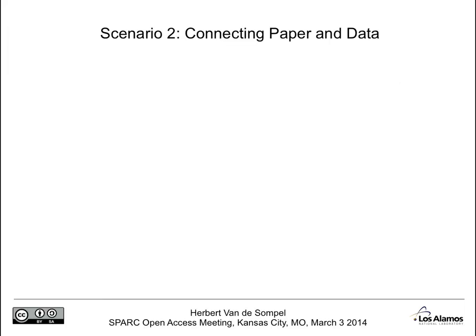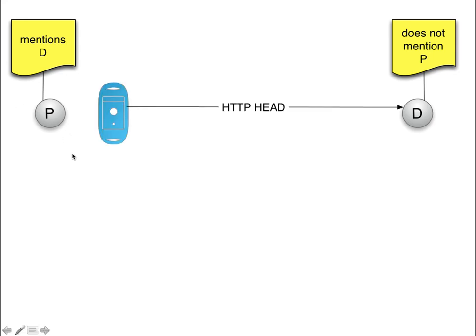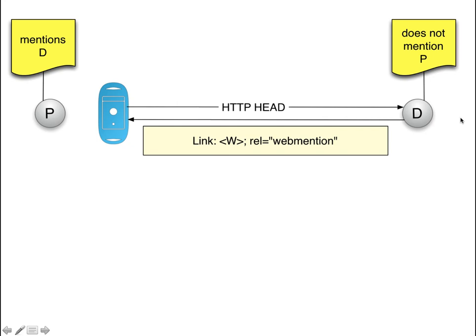The second example — a much-discussed one — is connecting paper and data. The same essential scenario: the paper mentions the dataset, but the dataset is not aware the paper mentions it, and we want to change that. A bot at the platform of the paper does an HTTP HEAD against the dataset. The dataset comes back with a relation type called WebMention and a URI of where that WebMention endpoint is available. WebMention is a new approach for trackback or pingback, and it basically allows parties on the web to let another party know that their resource references another one.